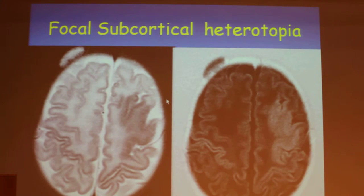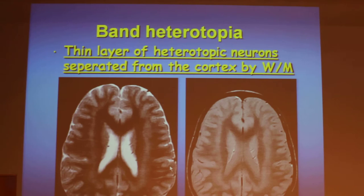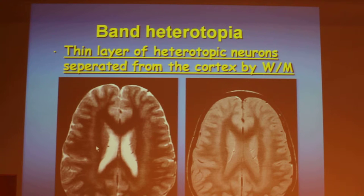Another example of a focus of cortical heterotopia is this case with a very thick gray matter and blurring of the gray-white matter differentiation. The band heterotopia is actually when the neurons started to do the migration towards the cortex and stopped as a band in the middle.